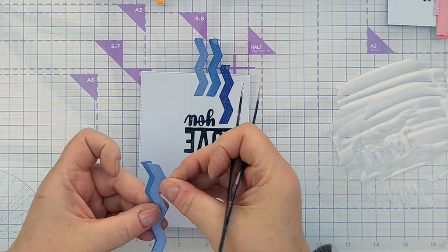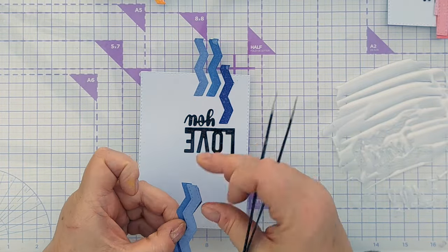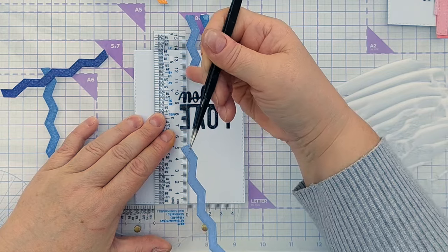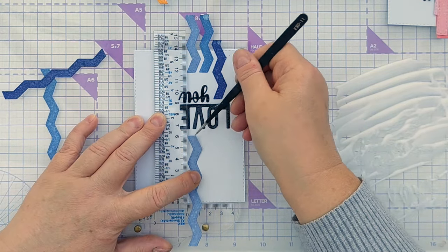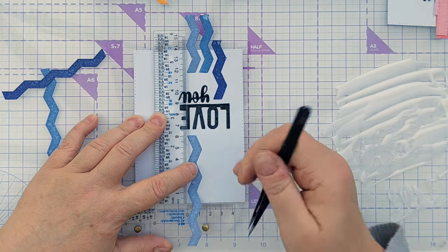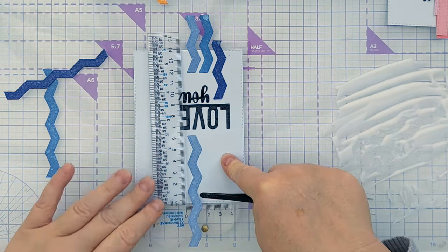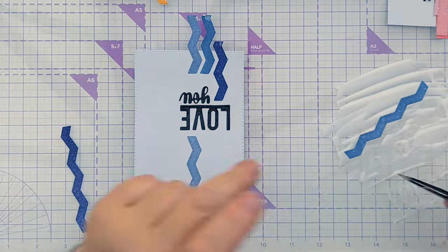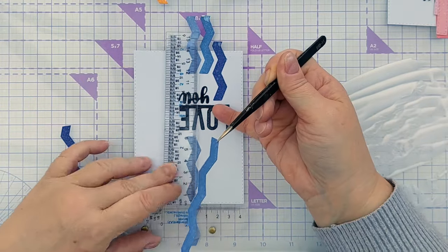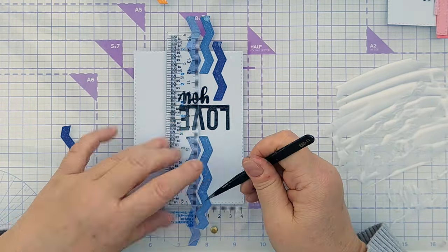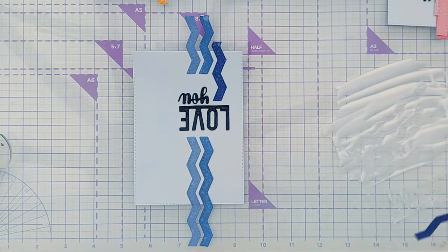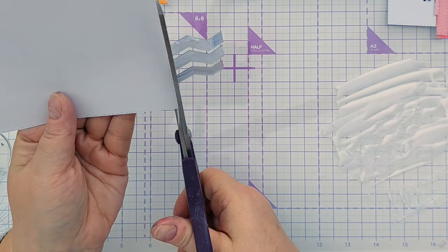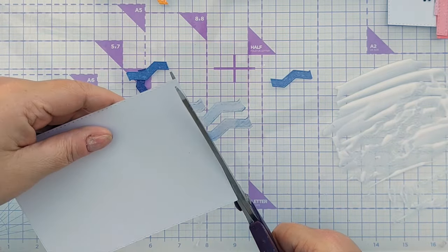Then we'll do the other end, again with the die cut end towards the middle. I want to get this point here lined up with this point here so it's as if this is continuous. And now I'm going to snip off the overhang and see what it looks like.